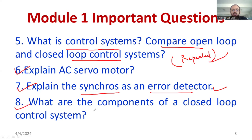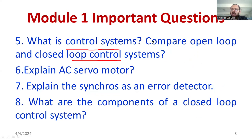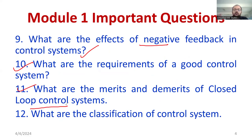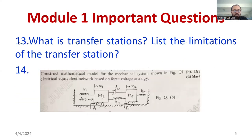What are the components of a closed loop control system? You have to talk about the system, feedback, comparator, and error. The error is the difference between desired output and actual output. Another important question: what are the effects of negative feedback in control systems? What are the requirements of a good control system — accurate, high speed, high accuracy, zero errors. What are the merits and demerits of a closed loop control system? What is the classification of control system — open loop and closed loop?